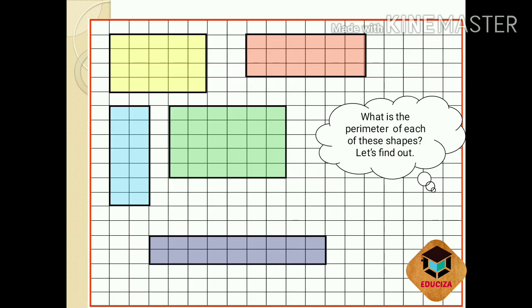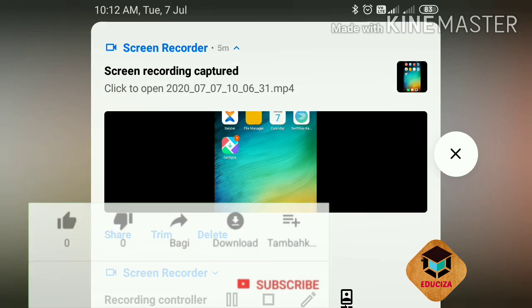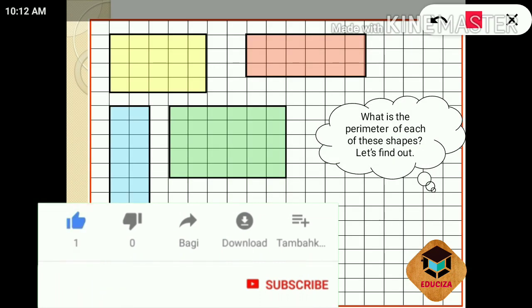Now let us look at some more shapes — a yellow colored rectangle, brown color, green color, blue color, etc. Let us find out the perimeter of each of these shapes.